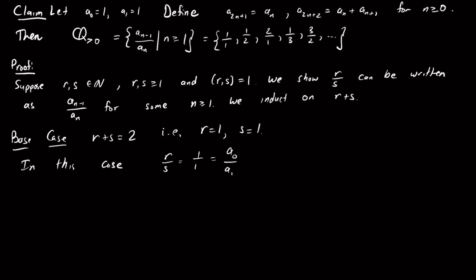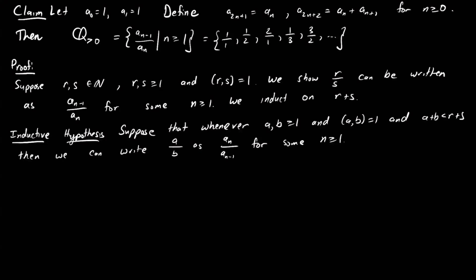Now the inductive hypothesis: suppose that whenever A and B are both greater than or equal to 1, relatively prime, and A plus B is smaller than R plus S, then A over B can be expressed as A sub n−1 over A sub n for some n greater than or equal to 1. So any time we encounter two numbers whose sum is less than R plus S, their ratio is in our set.